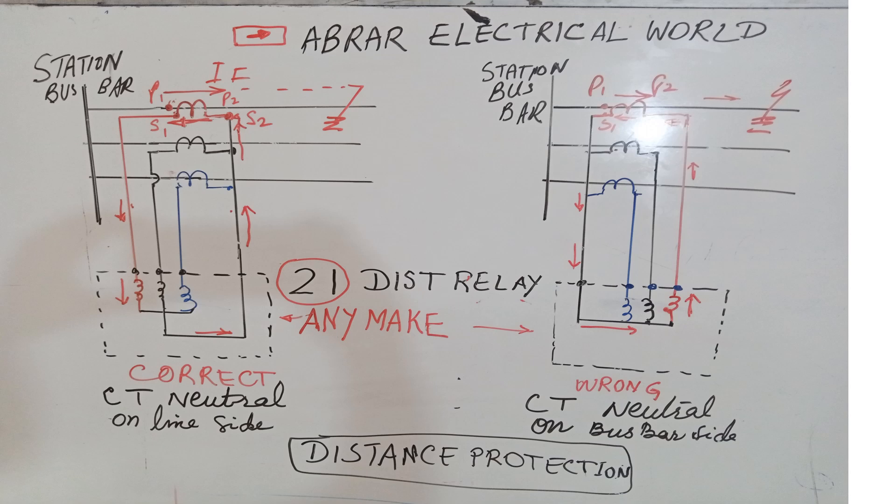I have made a video on CT polarity and will make another one. Now, if the fault current flows in this direction, the CT current will be in the opposite direction due to Lenz's law. If this terminal is dotted and this is also dotted — this is P1 and this is S1 — then current entering the primary will come out from secondary S1, the dotted point, and go into the relay, then return to the neutral. This is a distance relay.